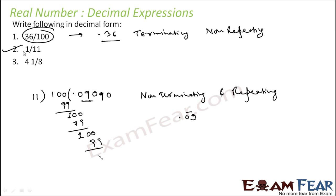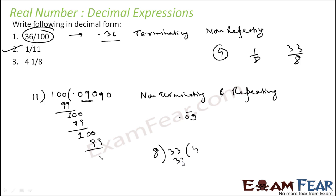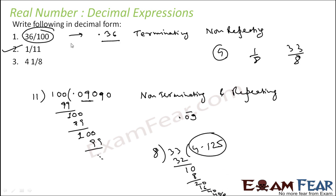The next is 4 and 1 by 8, which is the mixed number 4⅛. You can write 4 and 1 by 8 as 33 by 8. Dividing: 33 by 8 gives 4 with remainder 1; then 10 divided by 8 is 1, remainder 2; then 20 divided by 8 is 2, remainder 4; then 40 divided by 8 is 5, remainder 0. So you get 4.125. This is 4.125 — a terminating, non-repeating decimal, and thus a rational number.